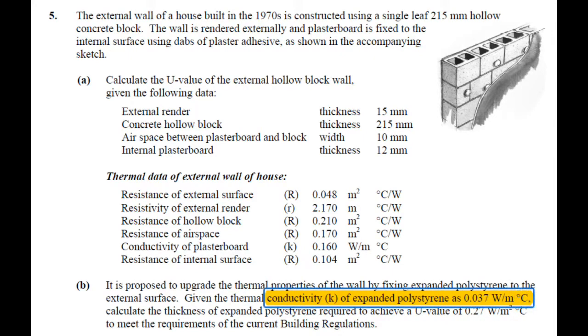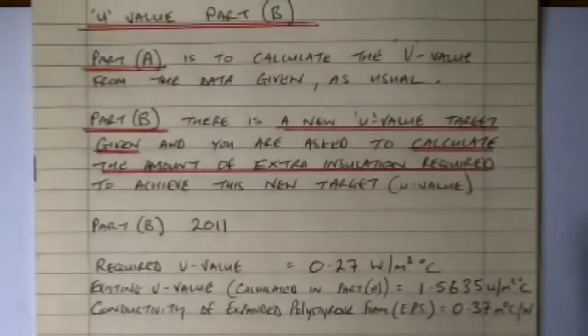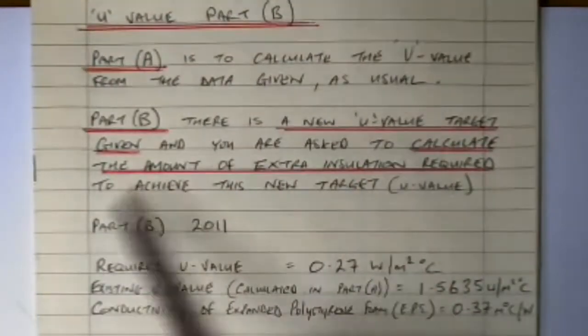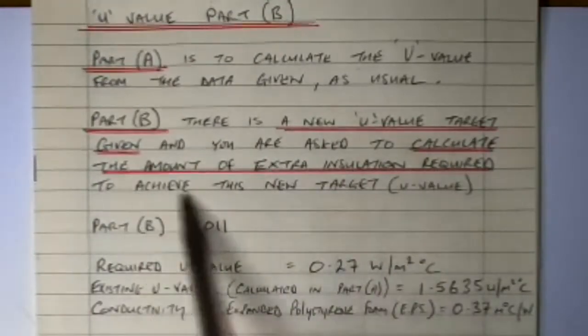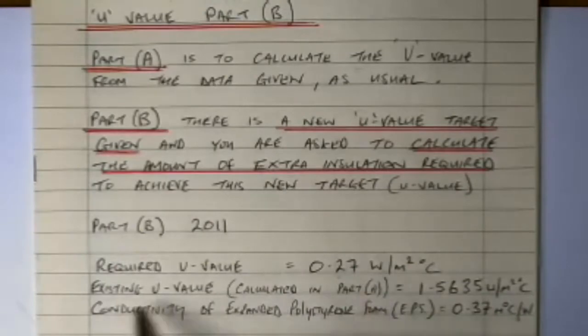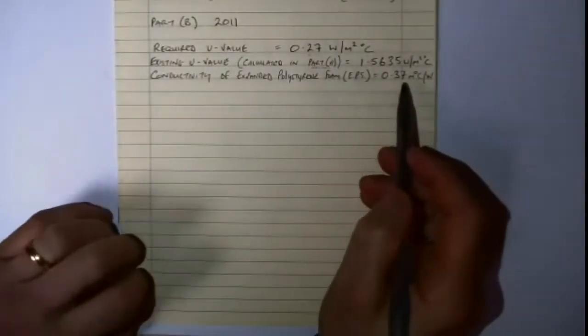In part B, I'm just highlighting here that we're given a bit of information. We're given the conductivity of expanded polystyrene, which is meant to be used to achieve this new U-value, and we are given the new U-value of 0.27. So those two pieces of information I'm going to require to solve this. So again, just part A as usual, calculate the U-value, and then the new U-value target that we have to get. We need to calculate the amount of extra insulation required.